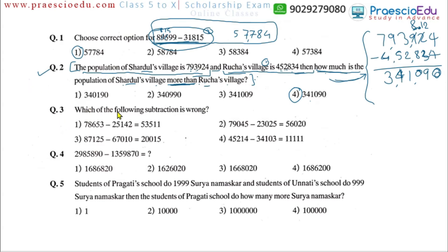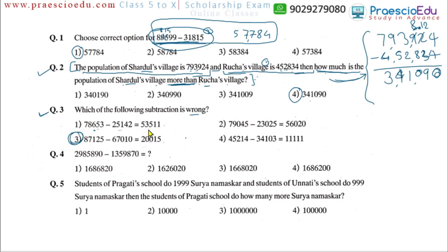Question number 3: which of the following subtractions is wrong? Please carry out all the subtractions in the same horizontal manner and find out which is correct and which is wrong. The correct answer for question number 3 is option number 3. If you made a mistake, please carry out the subtraction one more time and make practice in horizontal arrangement.